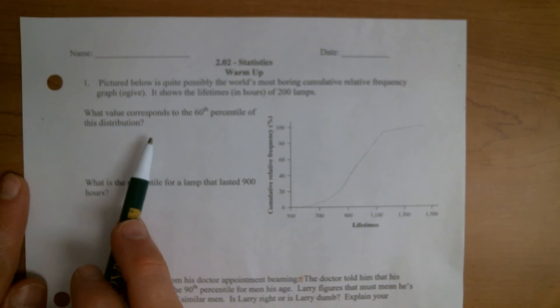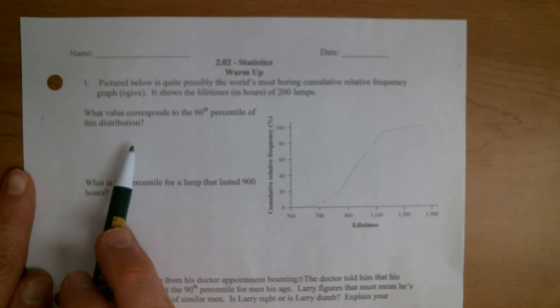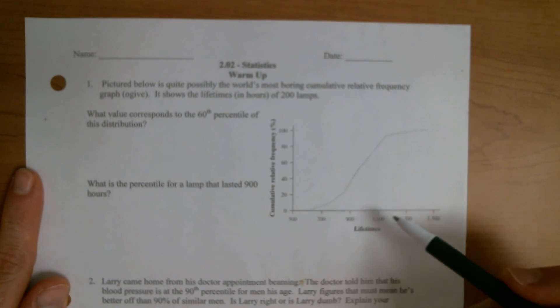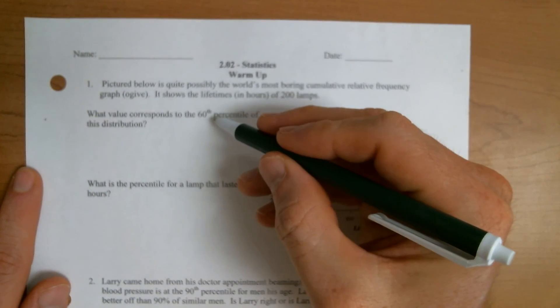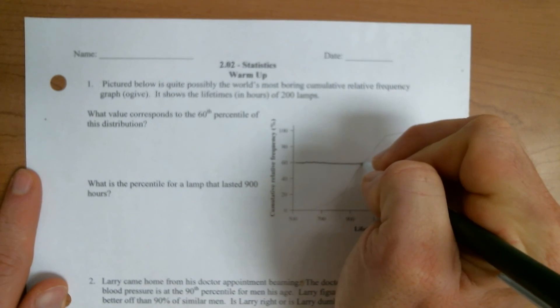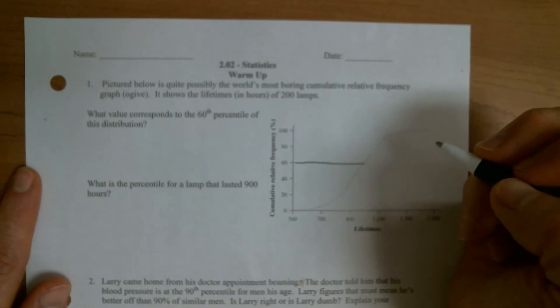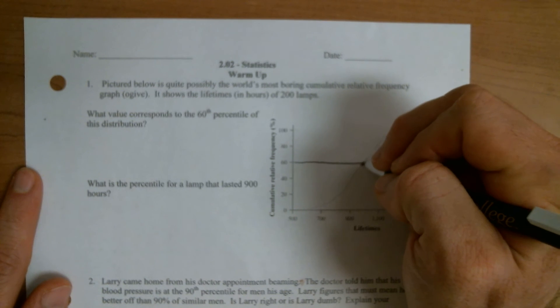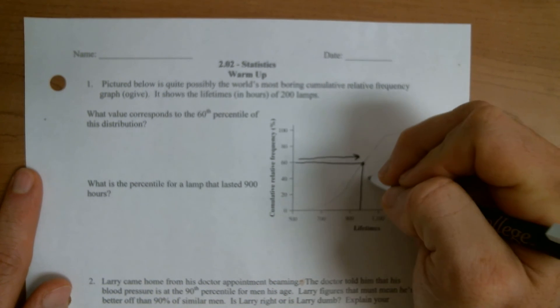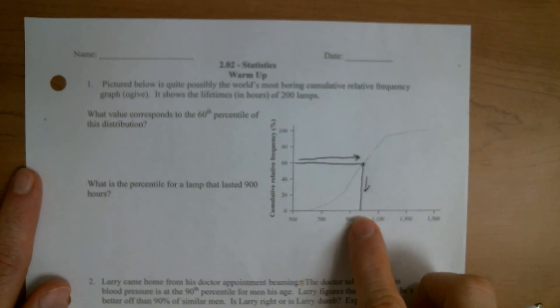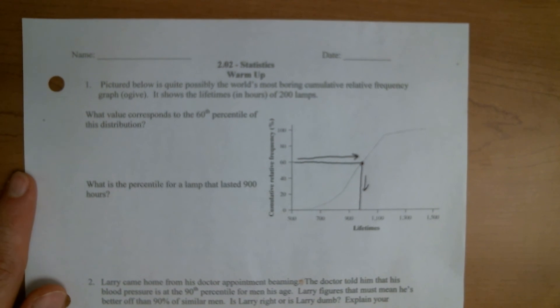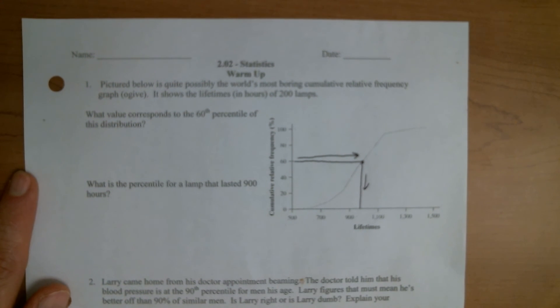So the first question says, what value corresponds to the 60th percentile of this distribution? So with these graphs, the percentiles are always on the vertical axis. The values are always on the horizontal axis. So they're giving us the 60th percentile. So we would go to 60 percent on the vertical axis. We would try to be as straight as possible and even better, have a ruler. But we go over until we hit the graph. When we hit the graph, we then go down.